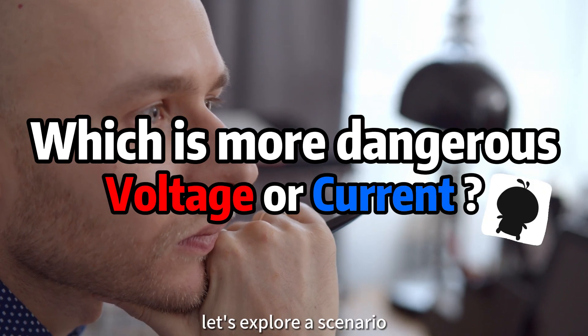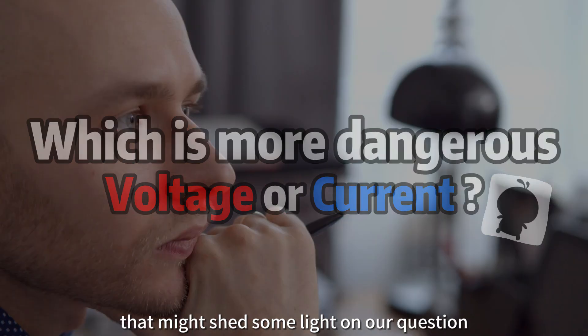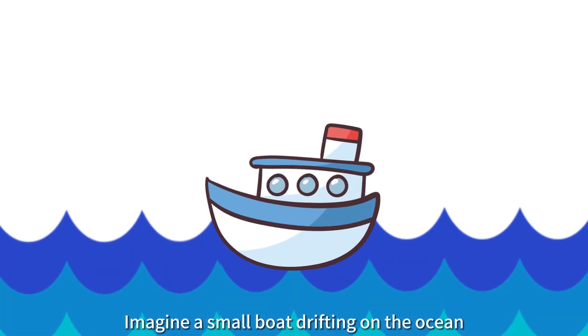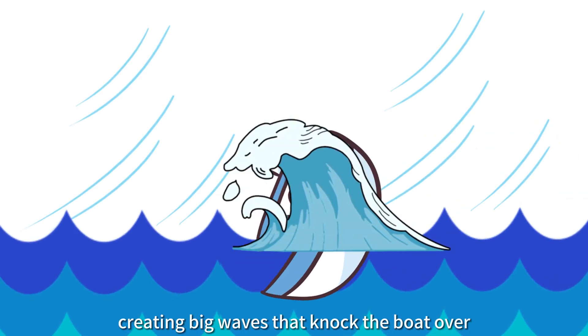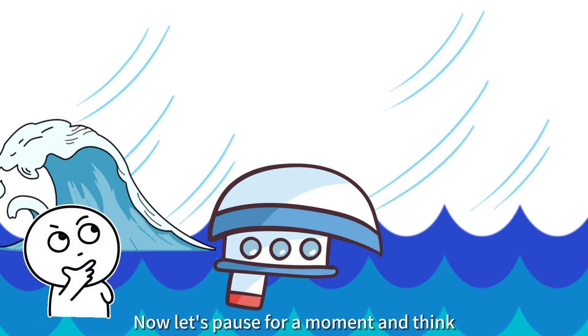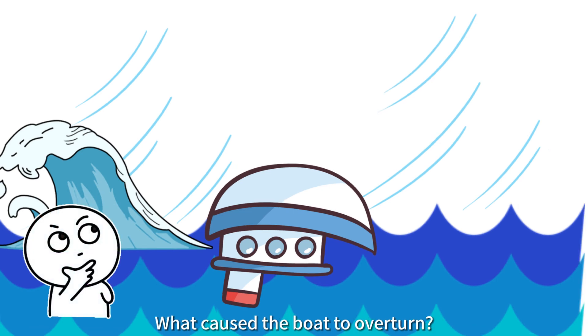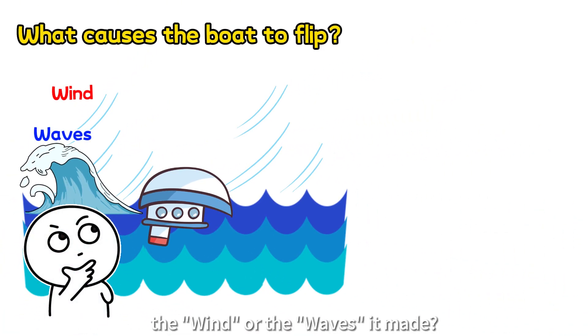But before we do, let's explore a scenario that might shed some light on our question. Imagine a small boat drifting on the ocean. Suddenly, a strong wind blows, creating big waves that knock the boat over. Now let's pause for a moment and think, what caused the boat to overturn? The wind or the waves it made.